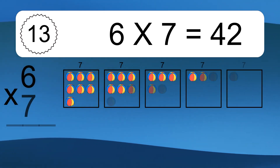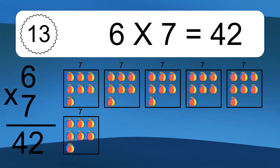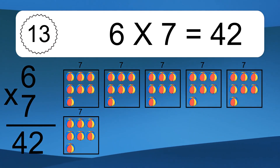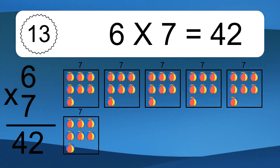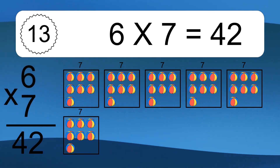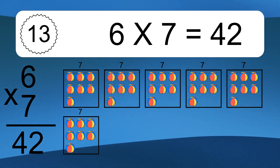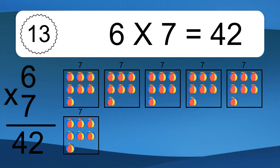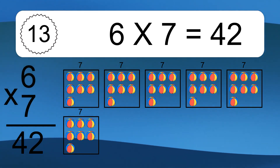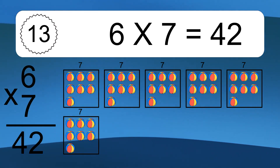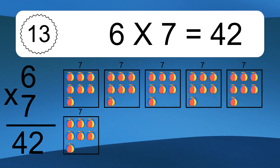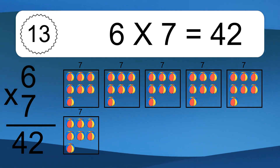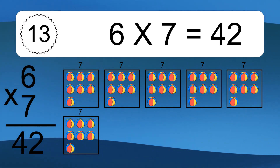6 times 7 equals 42. We have 6 boxes and each box has 7 colorful balls inside. If you count all the balls in all the boxes together, you will have 6 times 7 balls. This equals 42 balls.